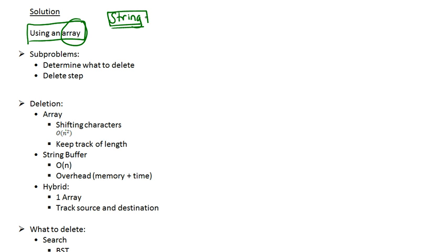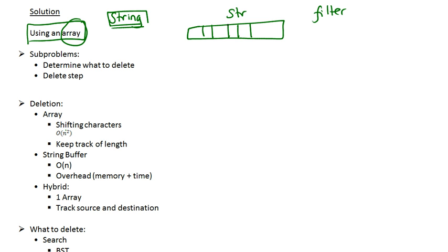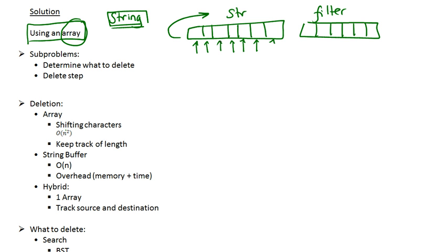We're going to convert every single string — we have two strings: the filter and the string itself — converting them to their array equivalents holding the characters within the string. That array will represent the string and will contain all the characters in the order they appear, and so will the other array. So now we have two arrays and we're going to be dealing with two arrays.